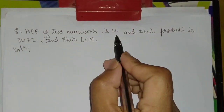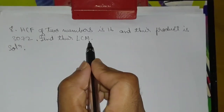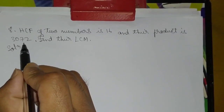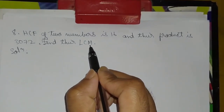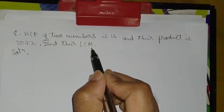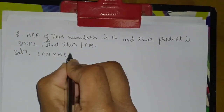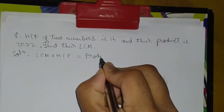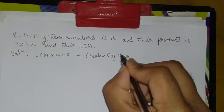Question number 8: HCF of two numbers is sixteen and the product is three thousand and seventy two. Find the LCM. You know HCF is sixteen, product is three thousand seventy two. Using the relation: LCM into HCF is equal to product of two numbers.